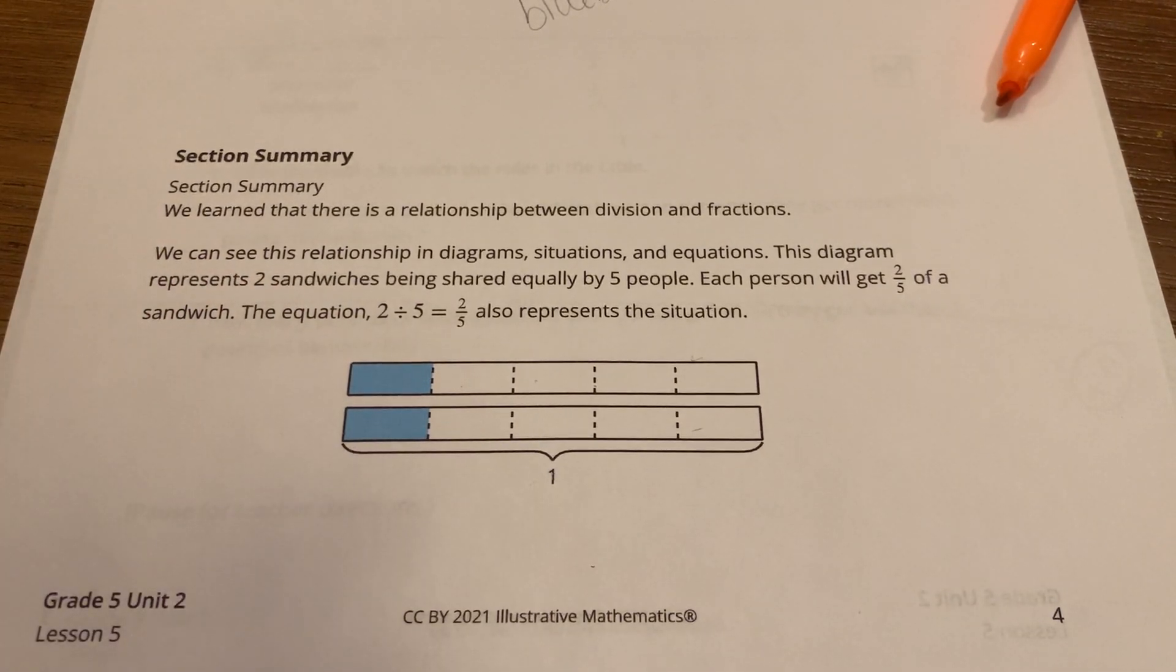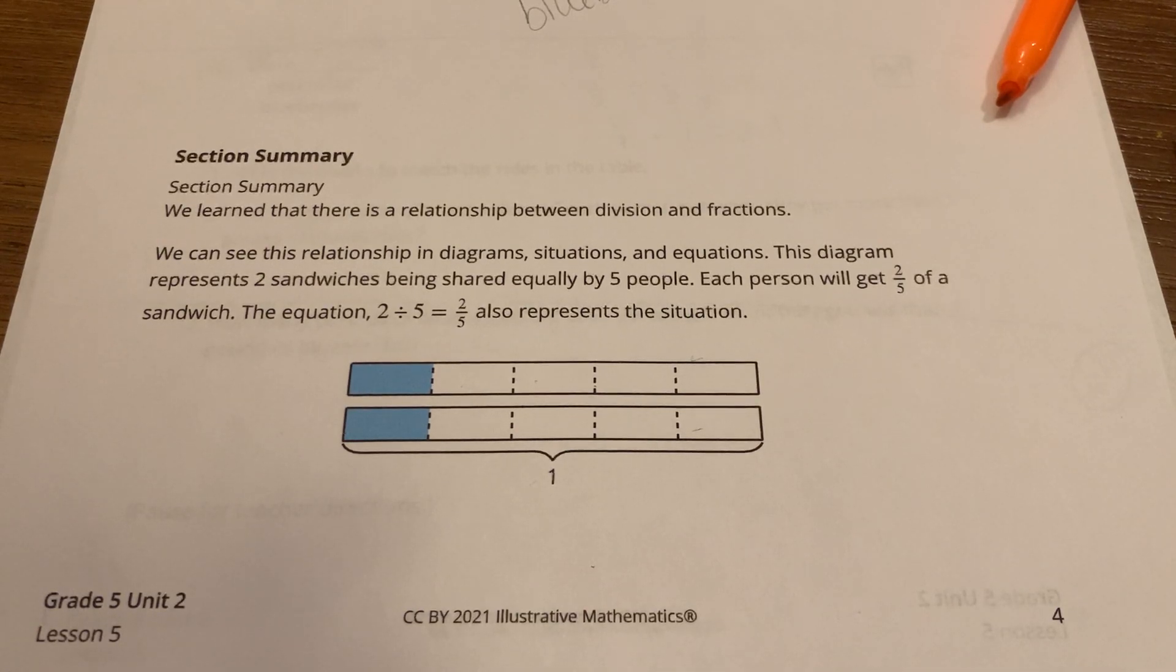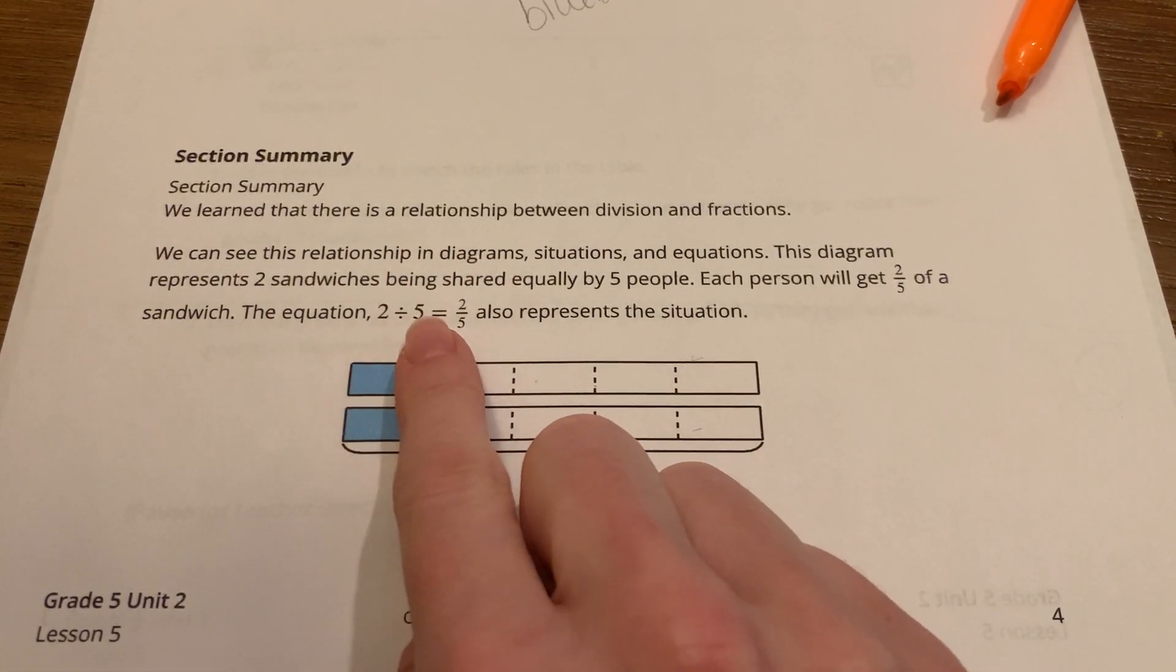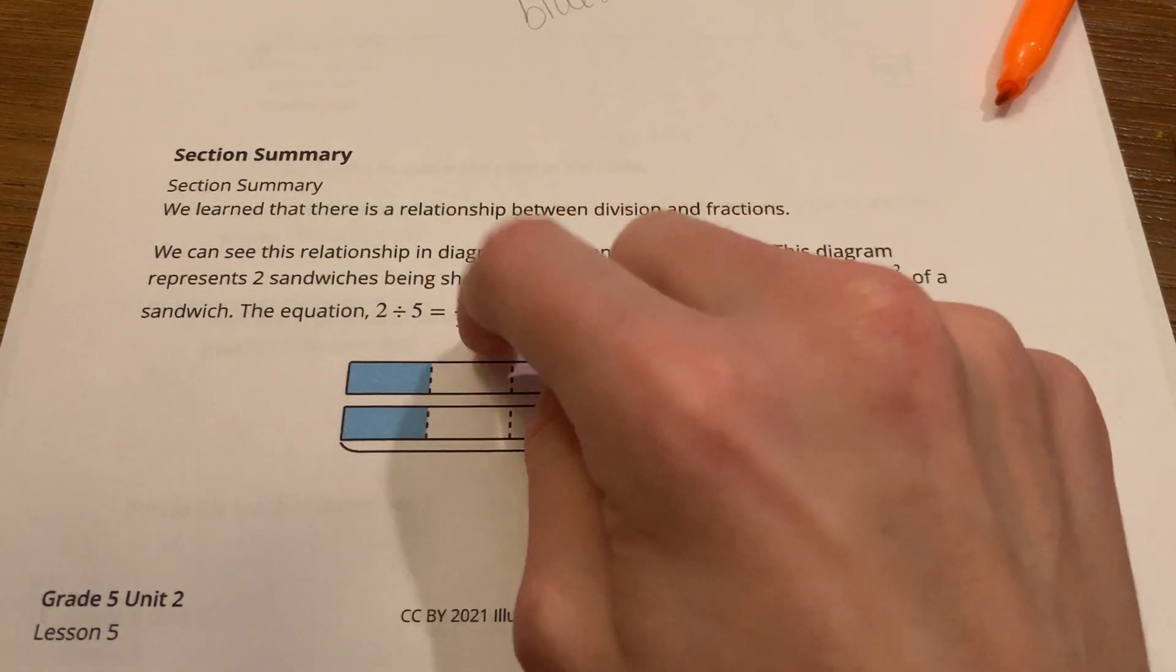So if that's confusing to you, think about when we poured the water the other day. The equation two divided by five equals two-fifths, which also represents this situation. So two divided by five equals two-fifths.